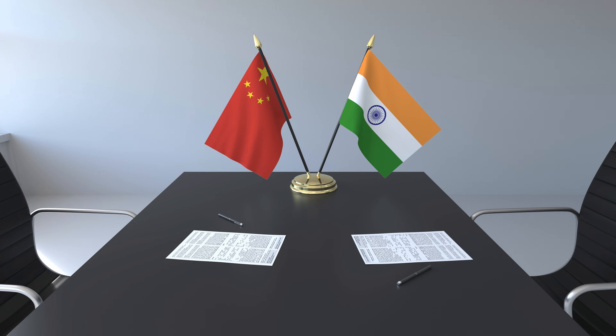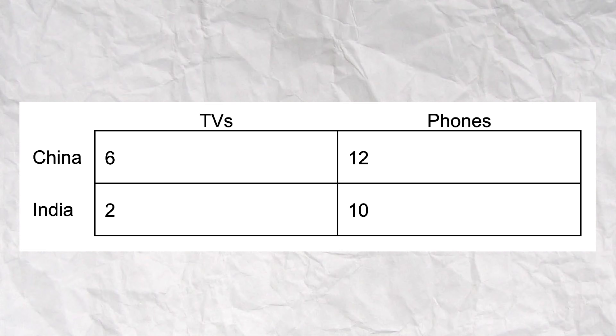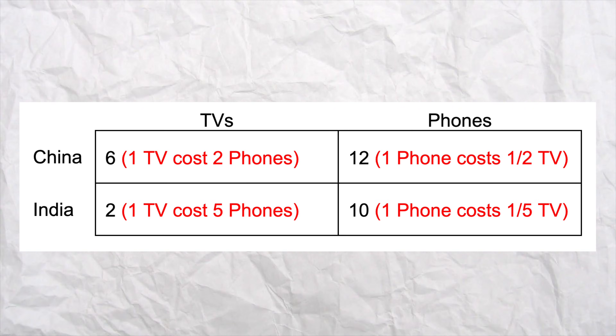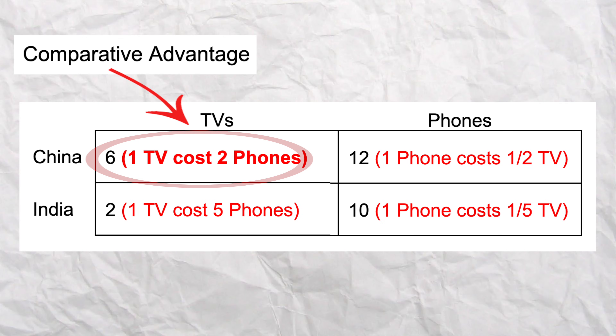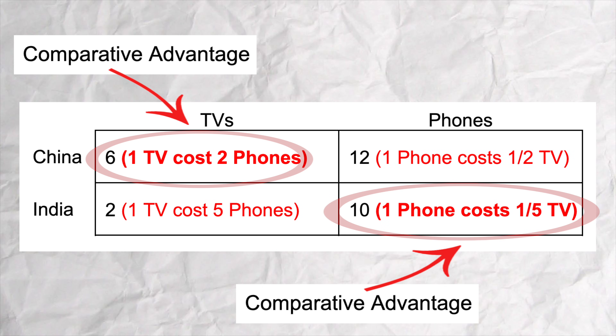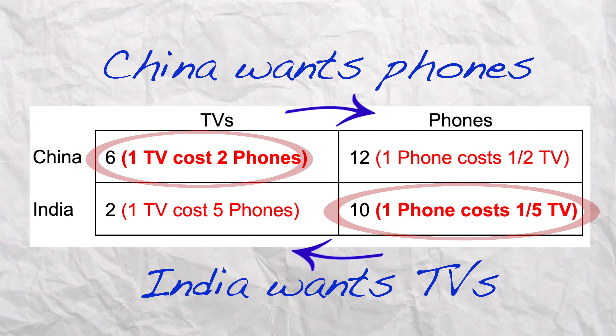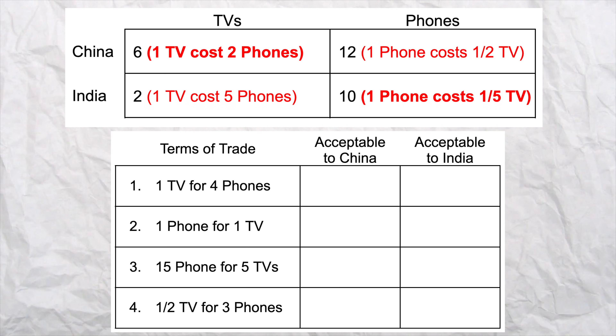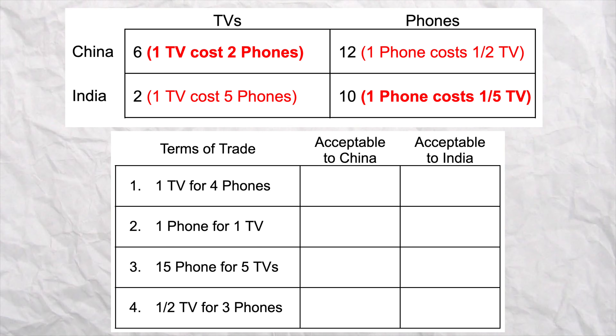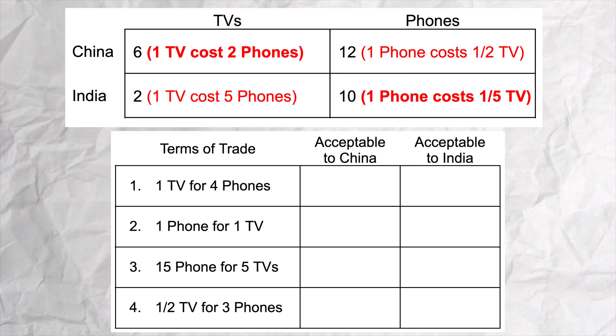Now it's time to practice. Let's assume there are two countries, China and India. With the same number of resources they can produce TVs and phones. Here is the opportunity cost for producing each good. You can see that China has a comparative advantage in TVs and India has a comparative advantage in phones. So if they decided to trade, China is gonna specialize in TVs so they want phones, and India is gonna make phones and they want TVs. Now you know which country wants what, and you have their opportunity cost. Here are four different terms of trade — your job is to figure out if they're acceptable to China and/or India. Pause the video now and see if each terms of trade is beneficial to each country.